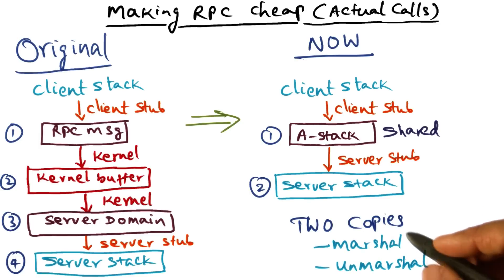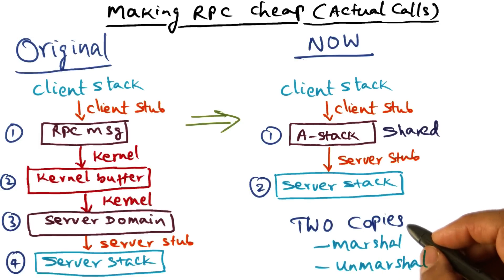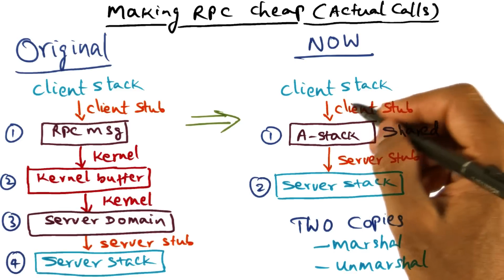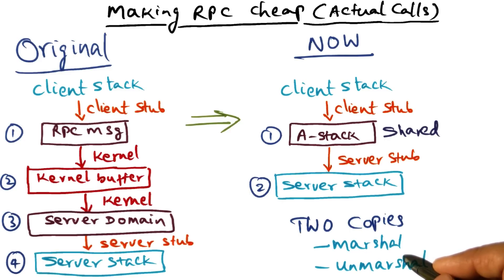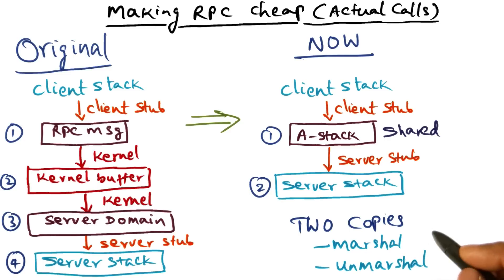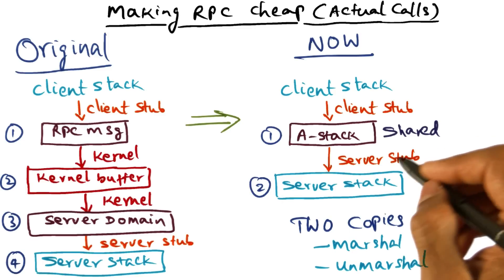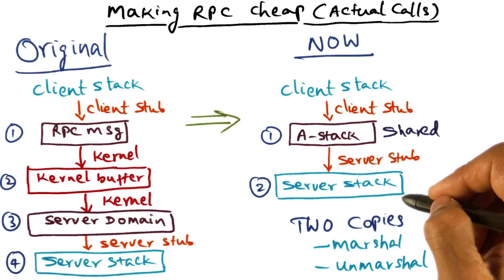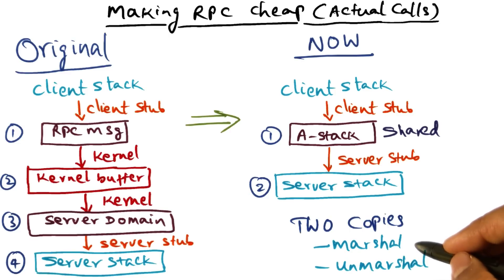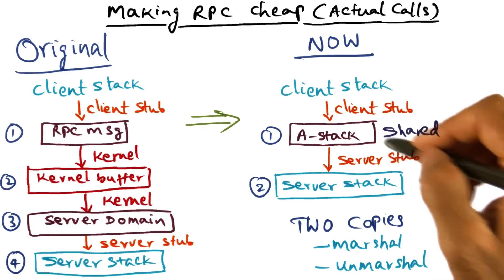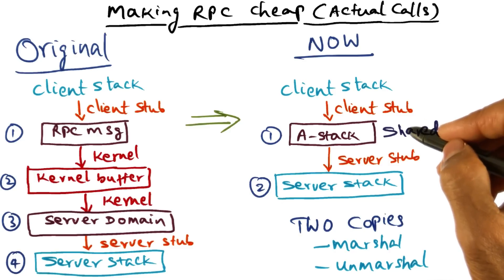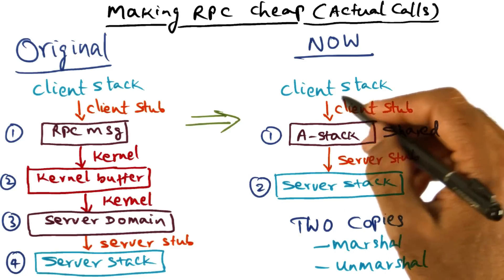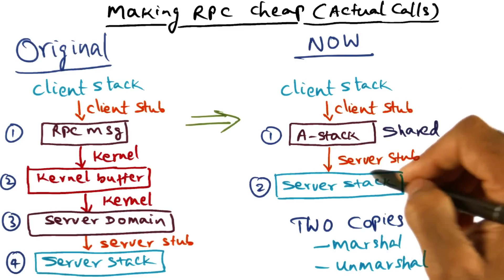So what we've accomplished is that the entire client-server interaction requires only two copies. One for copying the arguments from the client stack into the A stack, which is usually called the marshalling of the arguments. The second copy is taking the A stack arguments and copying them into the server's stack — that is the unmarshalling. Both these copies are happening above the kernel, in user space.